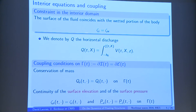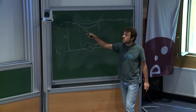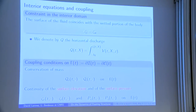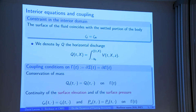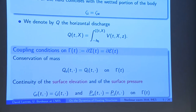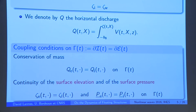In the interior region, you have a constraint: the parametrization of the surface of the fluid coincides with the bottom of the boat. With my notation, it means that the interior part of zeta — the restriction of zeta to the interior region — coincides with the parametrization of the bottom of the boat. This is a constraint in the interior region. To give the coupling condition at the border gamma(t), which is the border between the interior and the exterior region, you need to introduce some variables.